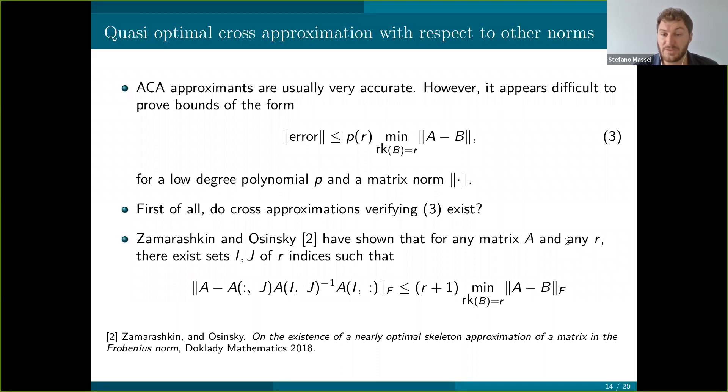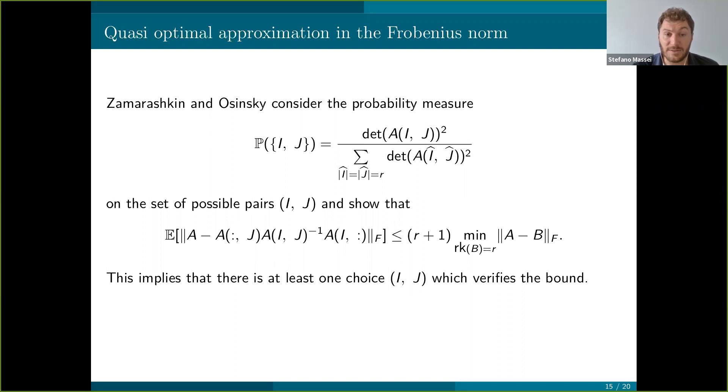For what concerns the Frobenius norm, Zamanashkin and Osinski answered positively to this question recently. They show that for any general metrics, not SPSD here, just in general, can be also rectangular metrics and any R, there exists a choice of i and j such that this bound is obtained here. Their proof exploits a probabilistic argument. They select a certain probability distribution on the set of possible choices for i and j. This probability distribution depends on the volume of the corresponding submatrices. And they show that the expected value of the approximation error in the Frobenius norm actually verifies the bound. This means since the expected value is an average, that there is at least one choice of i and j which verifies the bound.